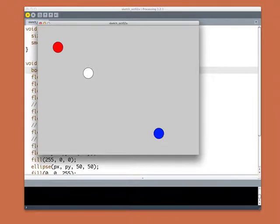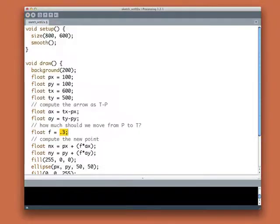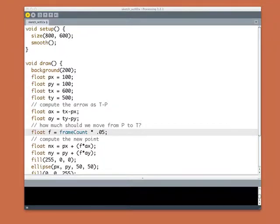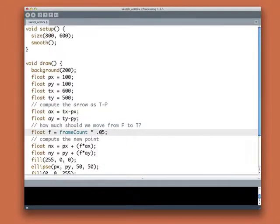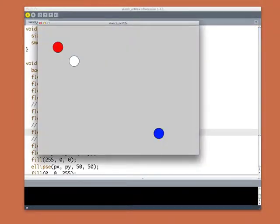And now, let's use frame count to actually move the white dot from the red to the blue. So, all I have to do is change the value of F. So, F is going to be frame count times something. And it should be really small. Let's try 0.05. We'll see how that looks. Whoa! That was way too fast. So, let's just cut that down by a tenth. And there we are. All I'm doing is changing the size of F.